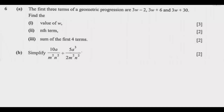Question 6 states: the first three terms of a geometric progression are (3w − 2), (3w + 6), and (3w + 30). Find: Roman numeral 1 — the value of w; Roman numeral 2 — the nth term; Roman numeral 3 — the sum of the first four terms. Let us first deal with part (a), then part (b).